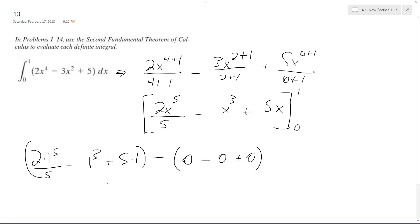well, it's pretty easy since it's all 0s. We just get 0 minus 0 plus 0, and then we end up with 2 5ths minus 1 plus 5,